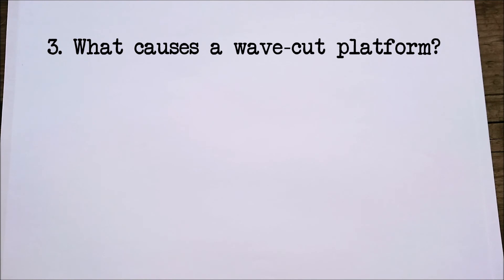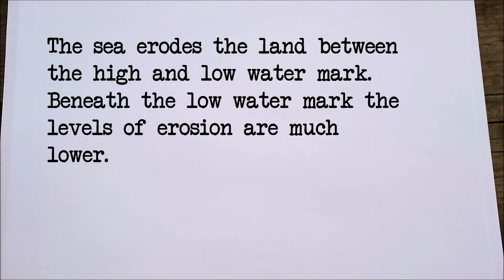Question three: what causes a wave cut platform? Well, the water doesn't tend to erode underneath the surface. It tends to erode where the water's moving at the surface between high and low watermark. The wave cut platform is found just below or on the low watermark where there's very little erosion, so it shows up the cliff above as eroded but the actual wave cut platform tends to stay in one piece. And that's all for the cliffs.